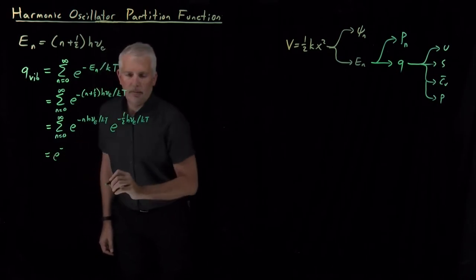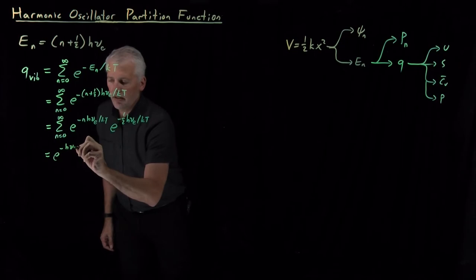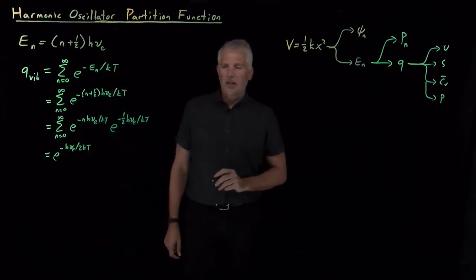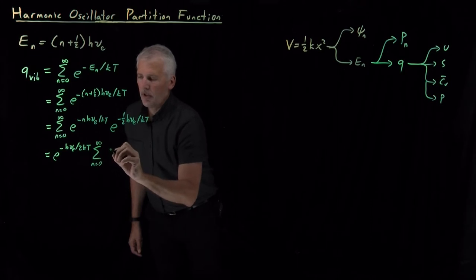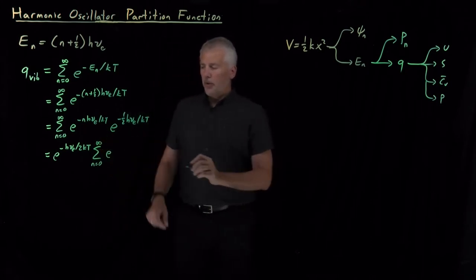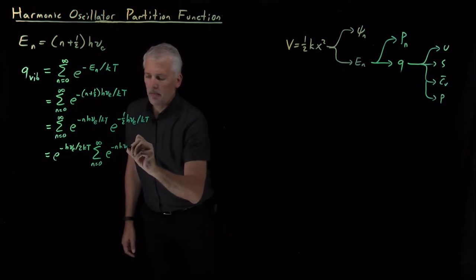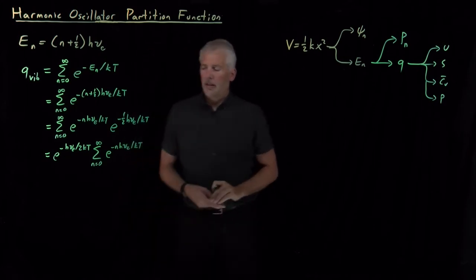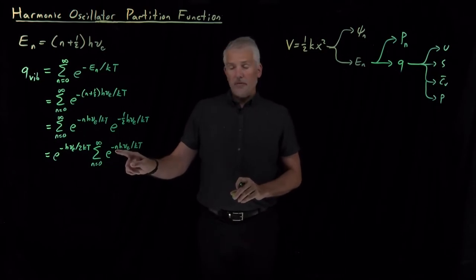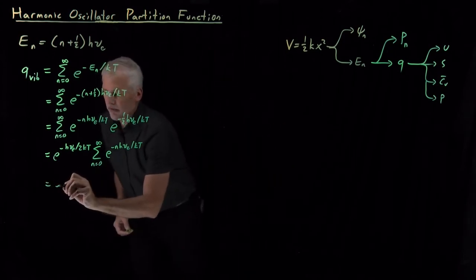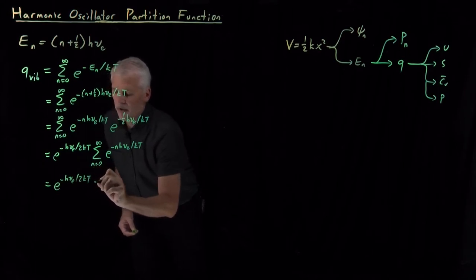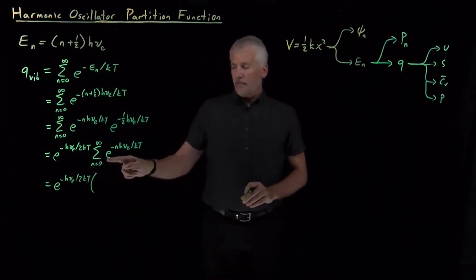So I've got e to the minus, and let me go ahead and write that as hν/2kT, bringing the factor of 1/2 as a factor of 2 in the denominator. All this is still multiplying the sum of e to the minus nhν/kT. I'll go ahead and write that the same way for now. And I can't pull that out of the sum, obviously, because it has this n in it. So let's think about what this sum means. The first term is still e to the minus hν/2kT.